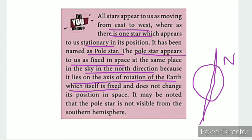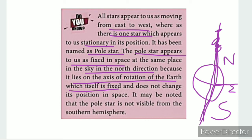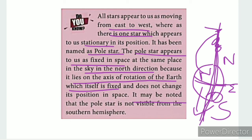This is the North Hemisphere and this is the Southern Hemisphere, separated by the Equator. The Pole Star is fixed along the axis of rotation. It may be noted that the Pole Star is not visible from the Southern Hemisphere.